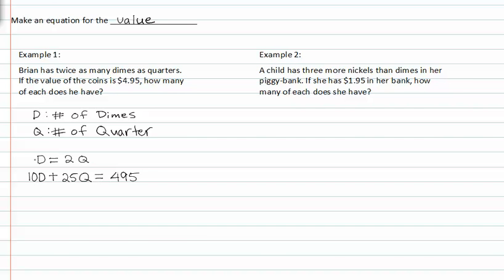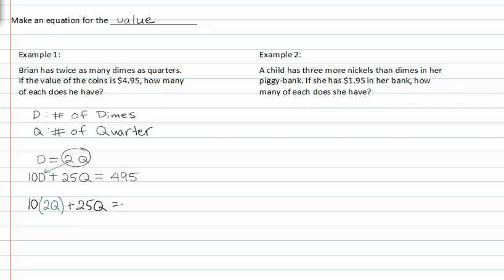Now that I have dimes and quarters, and I know that dimes equal two quarters, I can take this and substitute it in for d here. Now I have ten times two q in for d, plus twenty-five q equals 495. Multiplying through the parenthesis, I get twenty q plus twenty-five q equals 495.